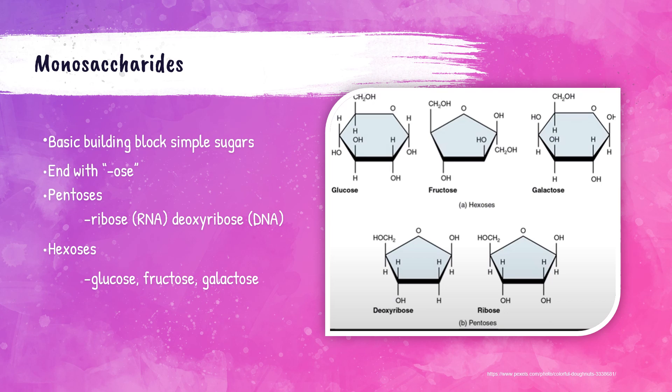Significant hexoses are glucose, fructose, and galactose. Glucose primarily acts as a source of energy. Fructose acts as an alternative metabolite providing energy especially when glucose is not available. Galactose also provides energy to the body. The picture on the right shows the molecules glucose, fructose, galactose, ribose, and deoxyribose — these are for reference only. As MLTs and MLSs, you do not need to memorize these structures for any board or exam.